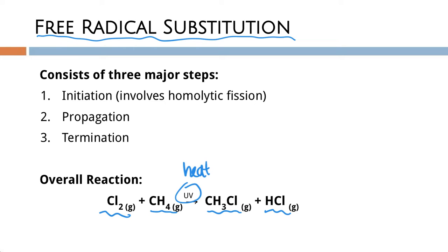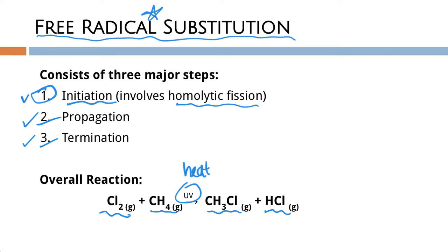This particular mechanism consists of three major steps: we need to produce free radicals, propagate the reaction, and then stop it at the end. The first step is called initiation, which involves something called homolytic fission. That's followed by propagation and finally termination. Writing out the mechanism requires us to write out all three pieces happening in this reaction.